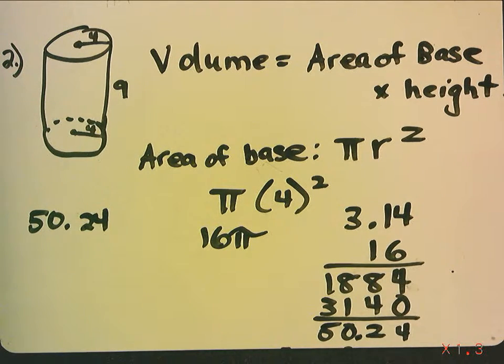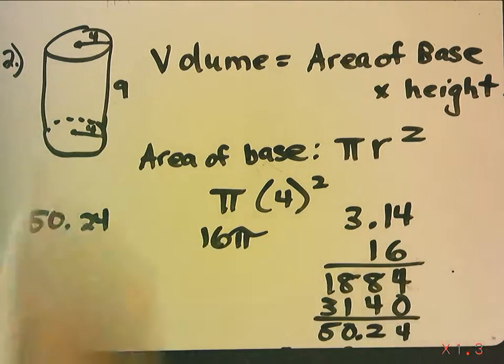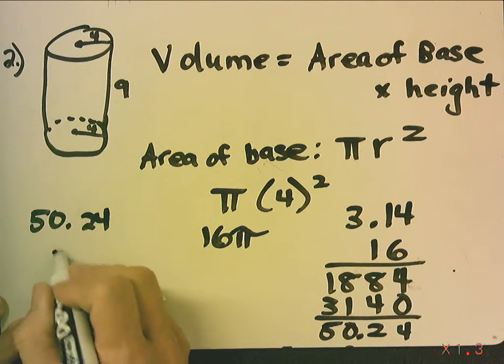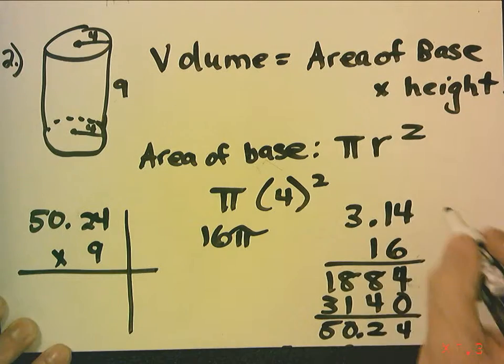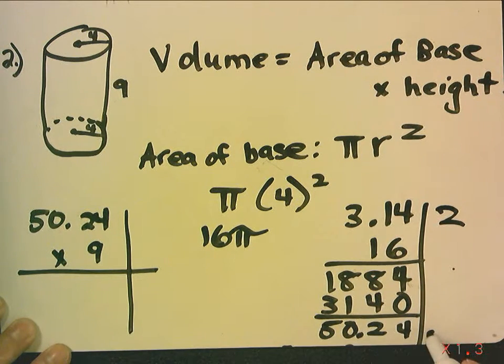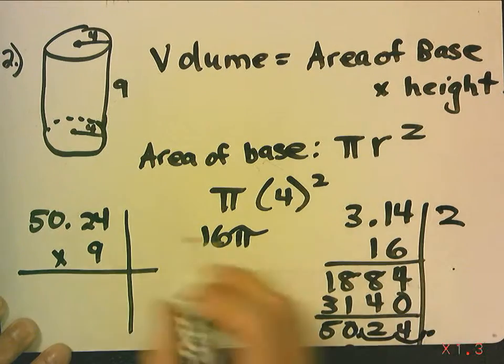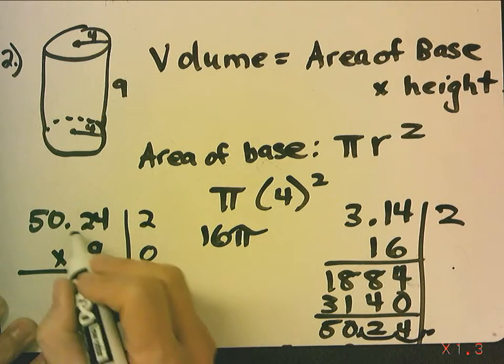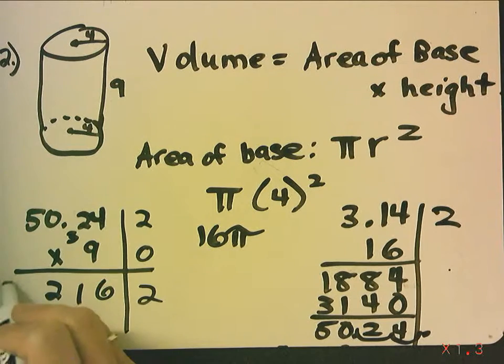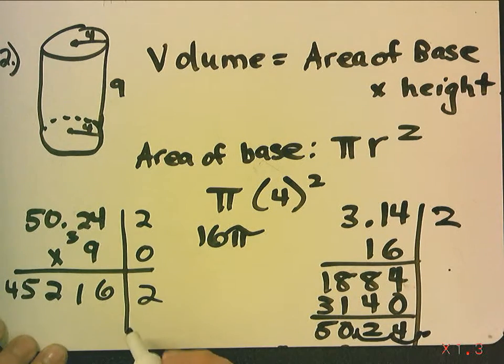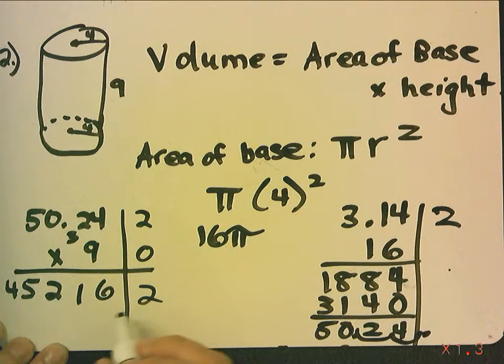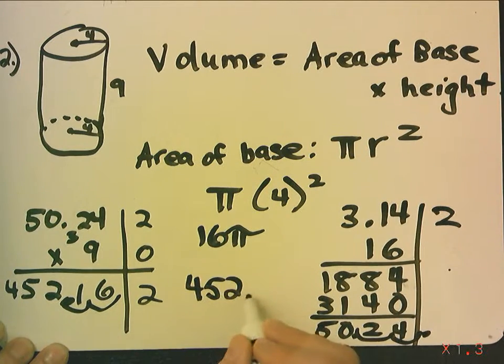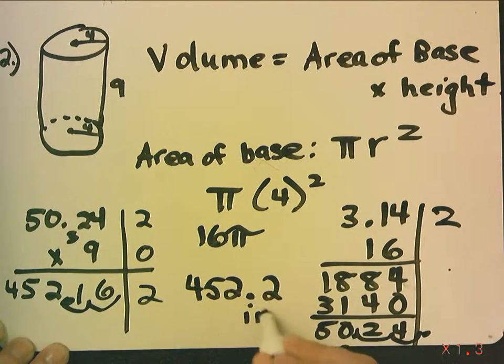Now, area of the base times the height. In this case, the height is 9. So, I multiply the area of the base, which is 50.24, times 9. Here, the reason I moved it over two decimal places was because I counted two decimals. Here, I'm also going to move my final answer over two decimal places. Now, I'm going to move it over one, two. So, my final answer is 452. Let's round it to two inches cubed.